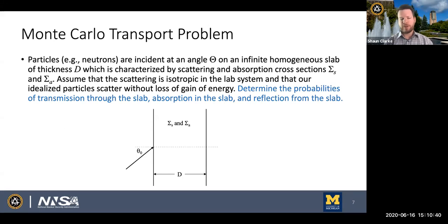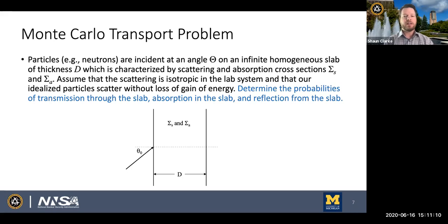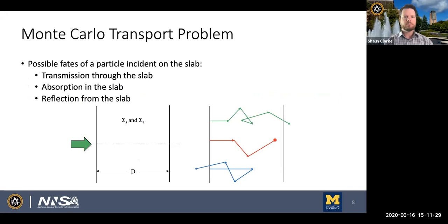I want to consider a 1D problem, making things as simple as possible so we can write out simple analog expressions. We'll consider a particle — a neutron — incident on a 1D slab, infinite in the other directions. The slab has cross sections available for both scattering and absorption. We'll assume all scattering is isotropic, and scattering events occur without loss or gain of particle energy — not physical, but it simplifies modeling the random walk.